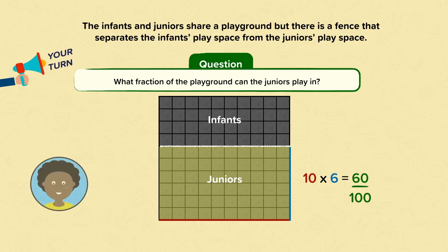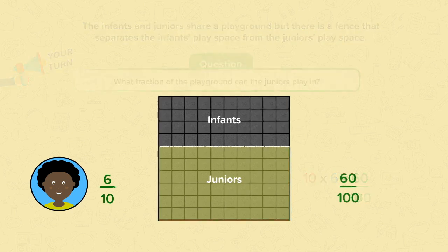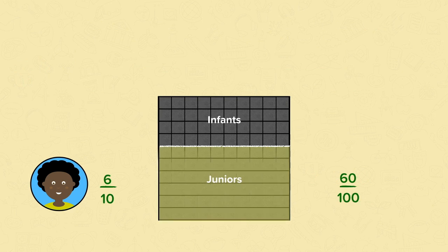Mustafa says that the juniors can play in six tenths of the playground. Let's explore what Mustafa is saying. Sixty hundredths is exactly the same as six tenths. You get a hundredth when you divide a tenth by ten. So six tenths and sixty hundredths are exactly the same.